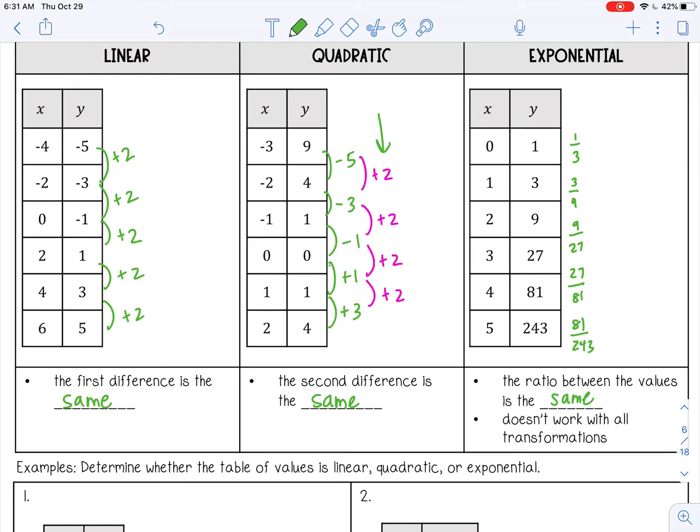Now those don't look the same, but they should all reduce to the same numbers. So 1 over 3, that's already reduced all the way. 3 ninths, that reduces to 1 third. 9 over 27, 1 third. 1 third, 1 third.